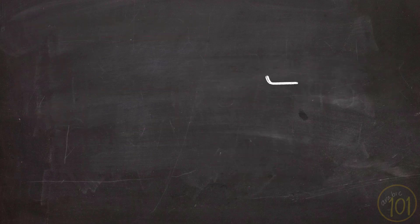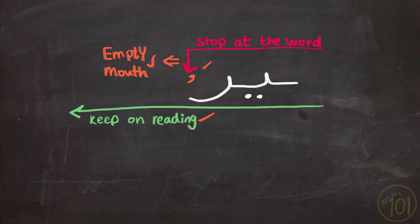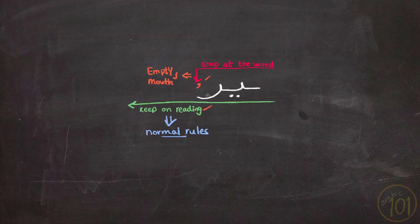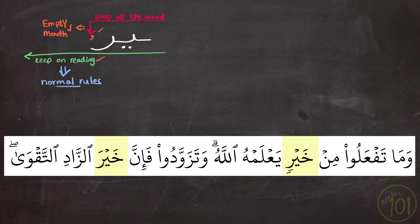Now, one last thing. If you have a word that ends with Ya and then Ra and you stop at that word, this Ra will always be empty mouth, no matter what type of short vowel is on top or under it. But if you continue reading, the normal rules apply. To understand this better, let's look at this example. In this ayah, we see that this word comes two times in the same verse — the first time it has tanween kasra and the second time it has fathah. I'm going to stop at the word and then continue.